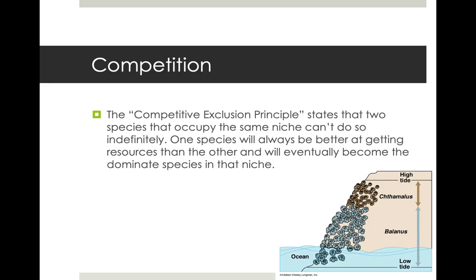One species is always going to be better than another species occupying the same area. In this example, the niche is the side of a mountain cliff and the species are two types of barnacles — Chthamalus (the brown barnacles) and Balanus (the blue barnacles). Barnacles are filter feeders that prefer to stay underwater most of the day. Being out of the water exposes them to sunlight, risk of dehydration, and reduced feeding time.